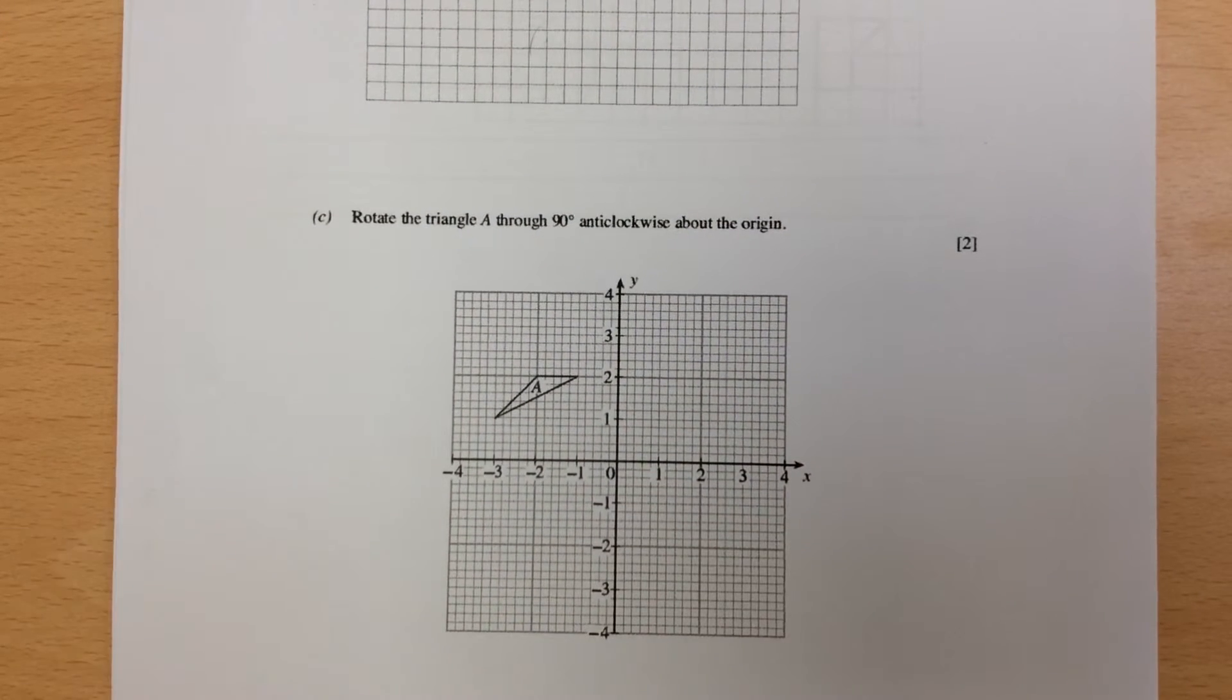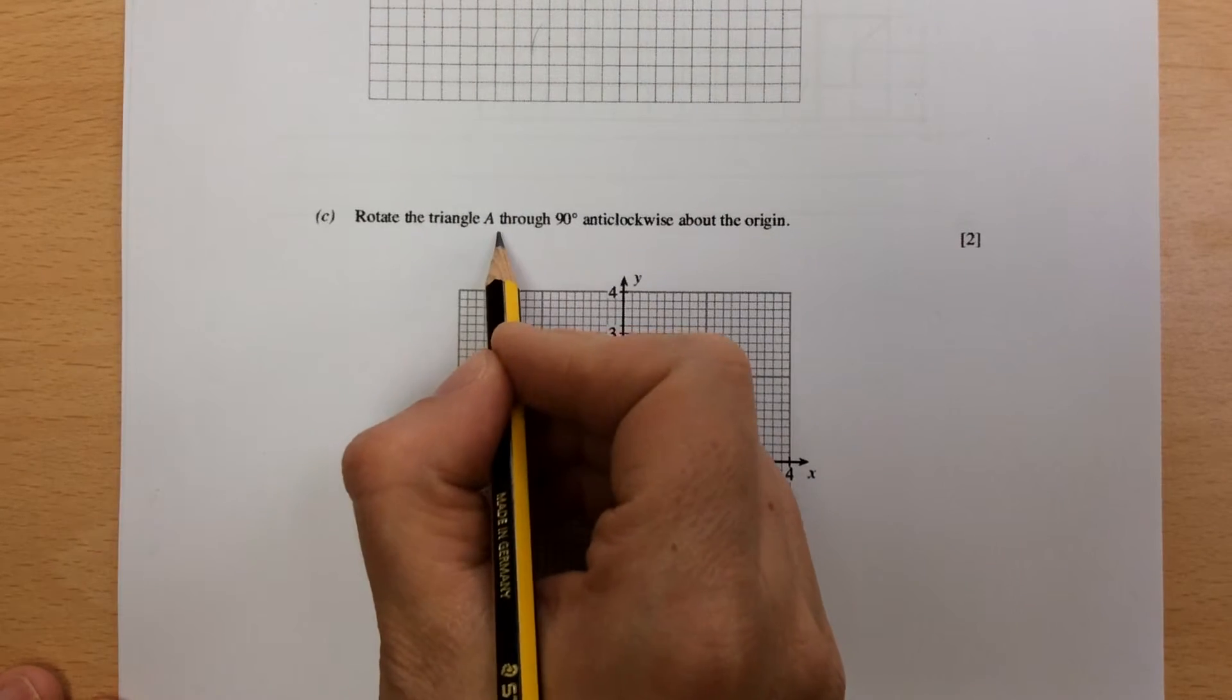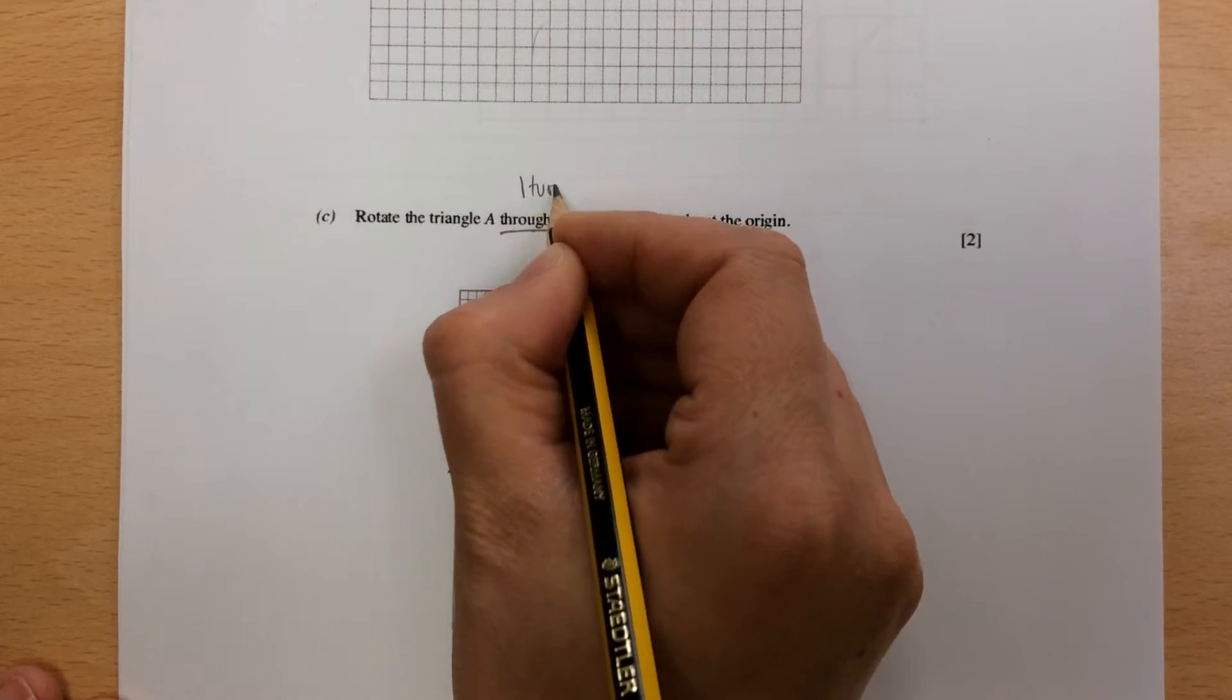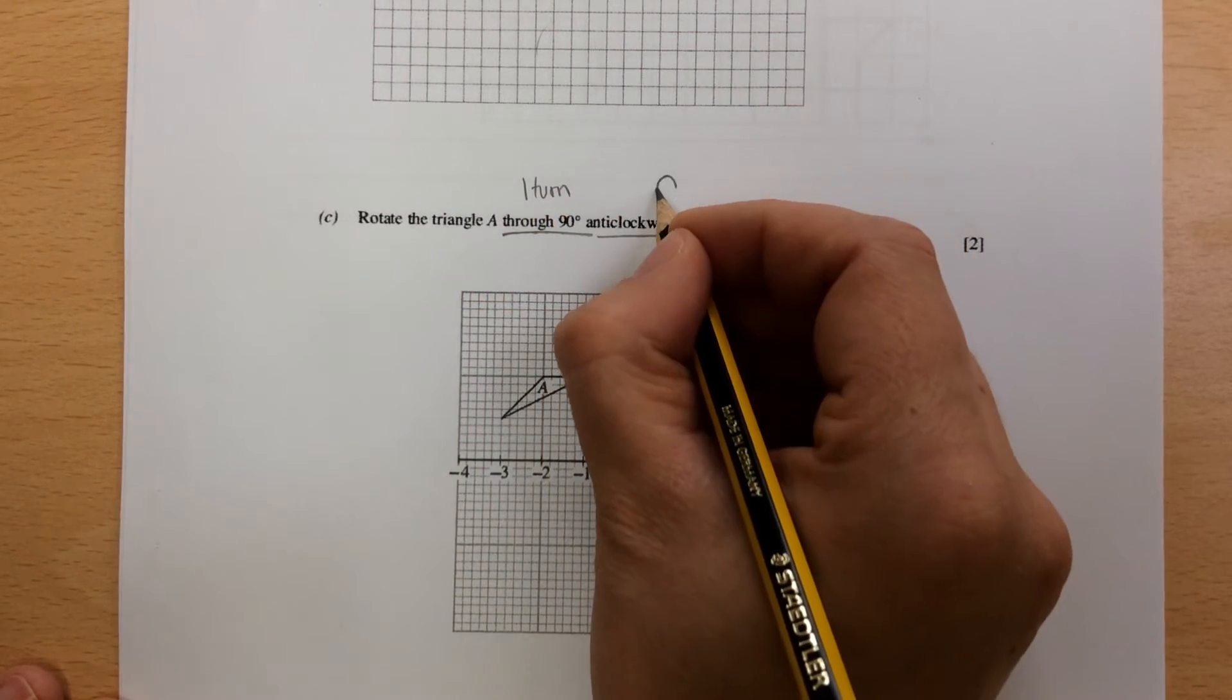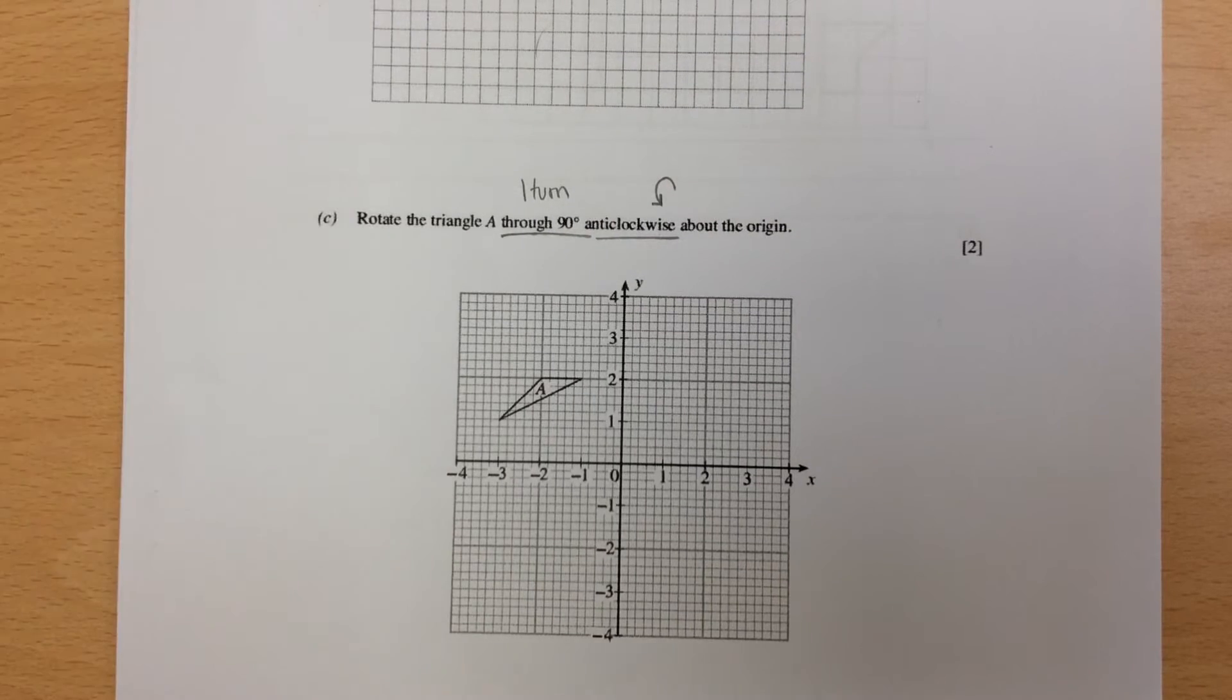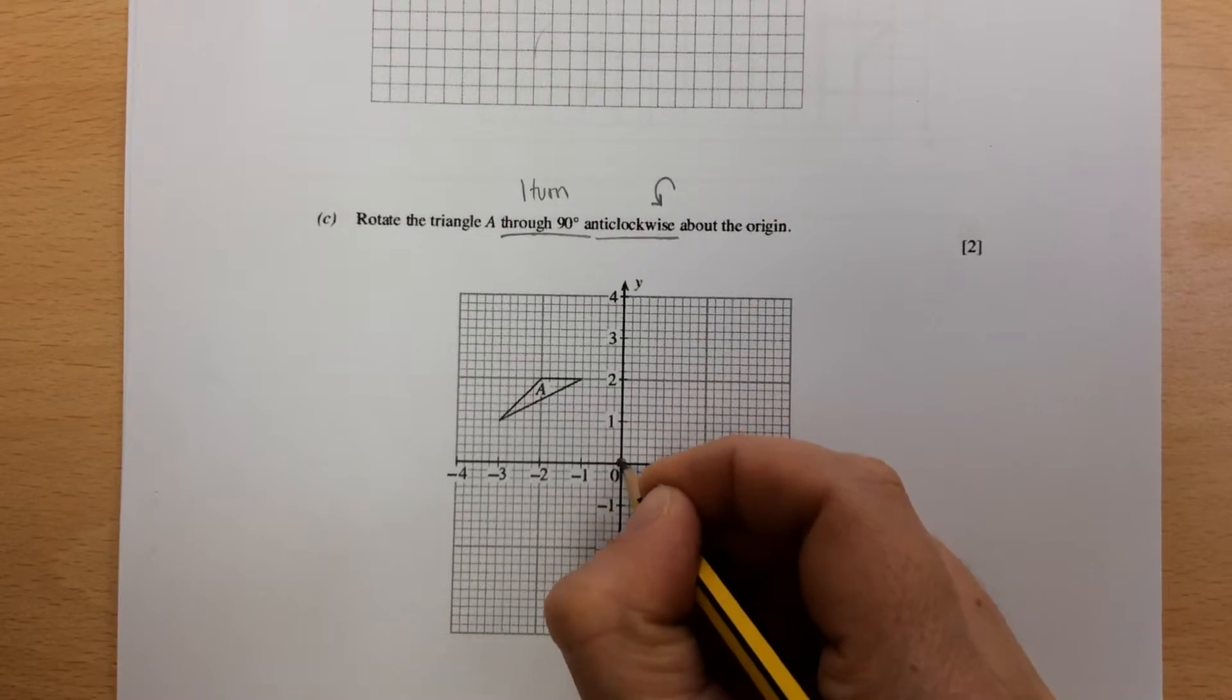Rotation, then, of triangle 90 degrees anticlockwise. Now this is the important bit. 90 degrees, you have one turn. And anticlockwise, you're going this way. Wrong way to the clock. So we're going from the origin, which is the center.